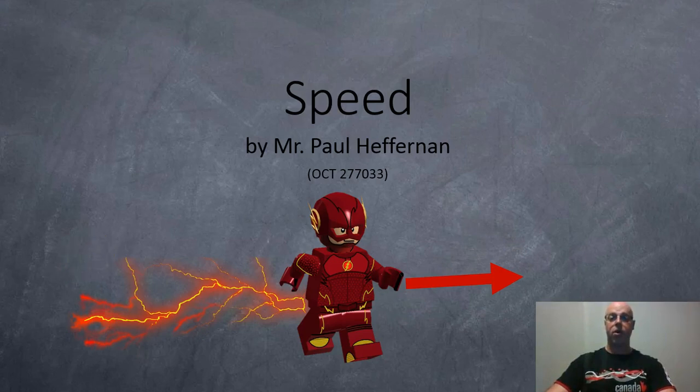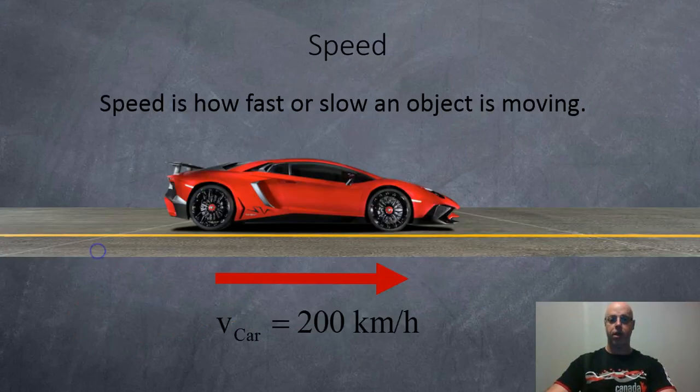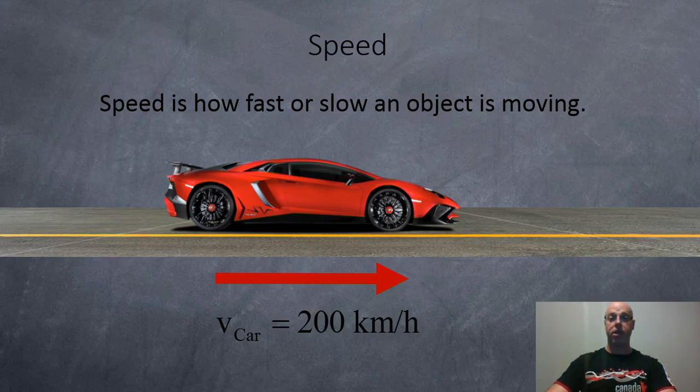Mr. Heffron here and here's a video on speed. Speed is generally how fast or slow an object is moving. For example, this car here is moving at 200 kilometers per hour.